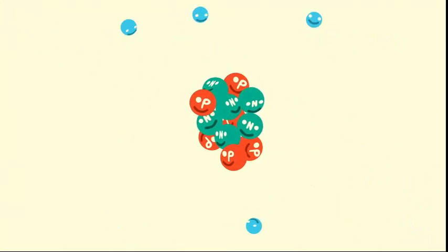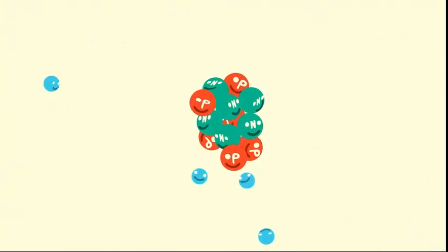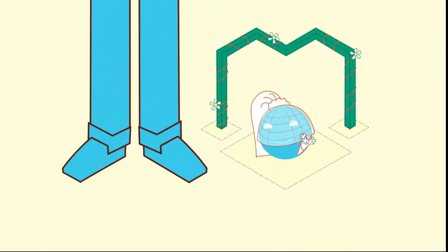Okay, tangent over. The cores of atoms tend to stick together, but electrons are free to move. And this is why chemists love electrons. If we could marry them, we probably would.